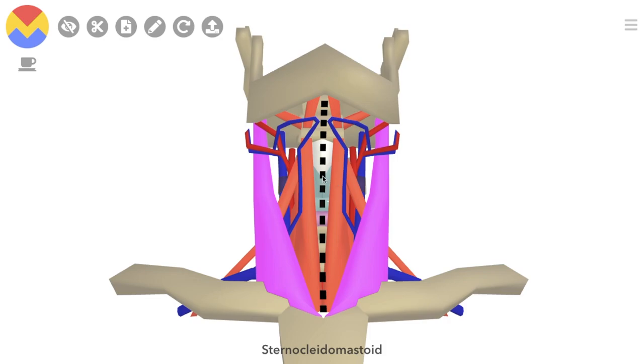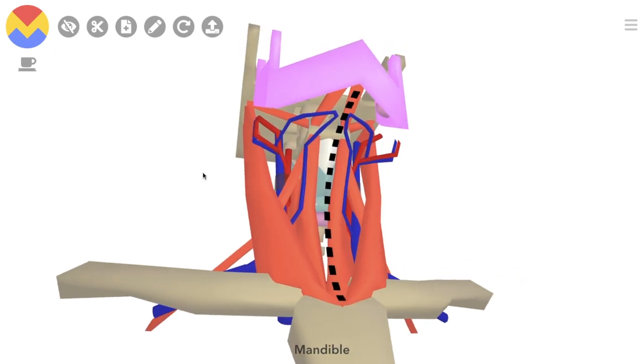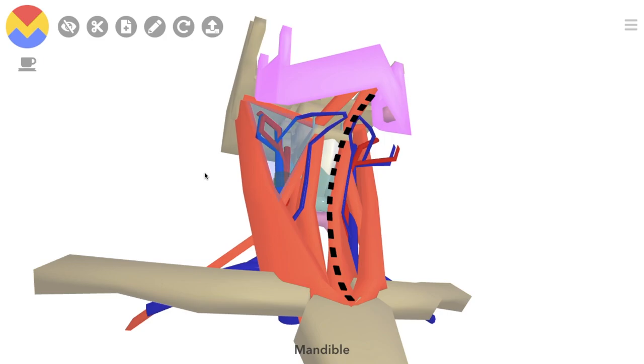Its borders are the midline of the neck, sternocleidomastoid, and the mandible. It's further divided into four smaller triangles: the carotid, submandibular, submental, and muscular triangles. To really get your head around these, click the link in the video description. You can have a look around this model yourself.